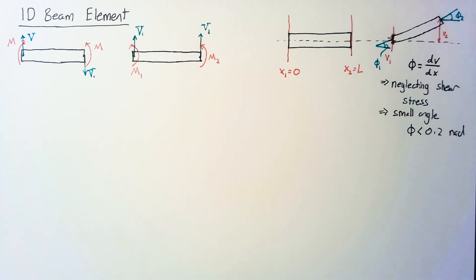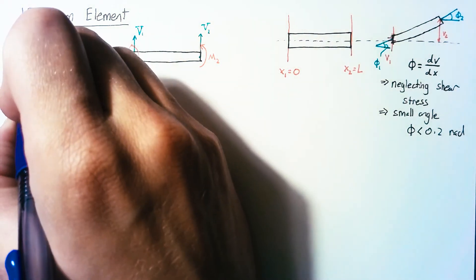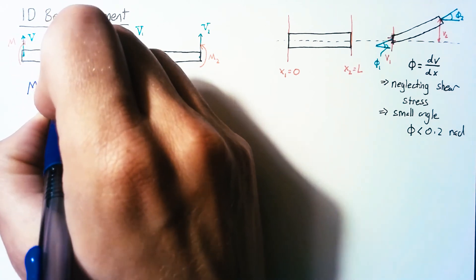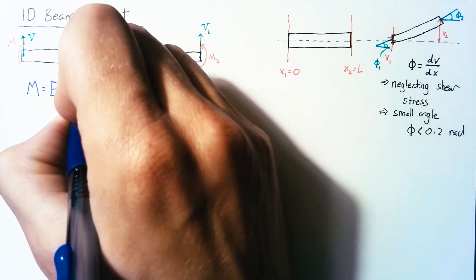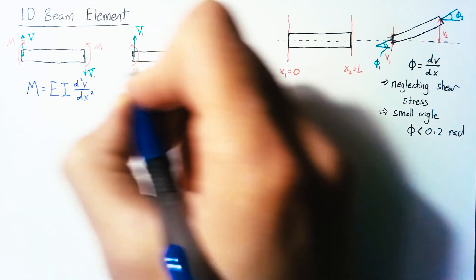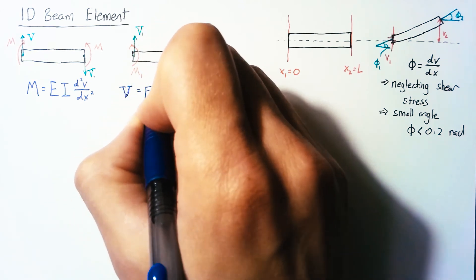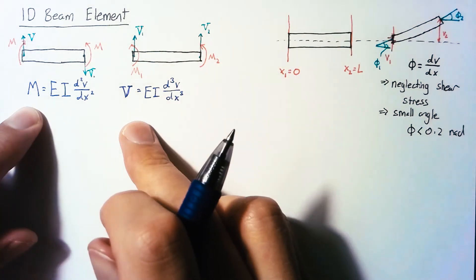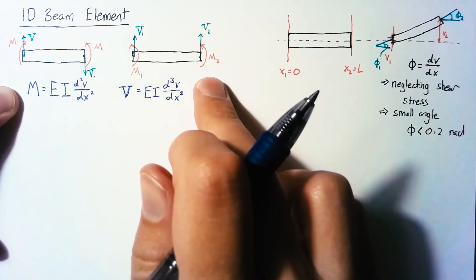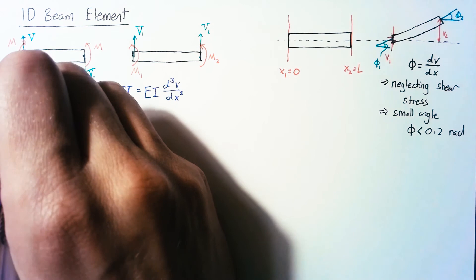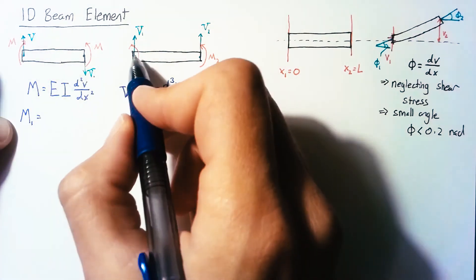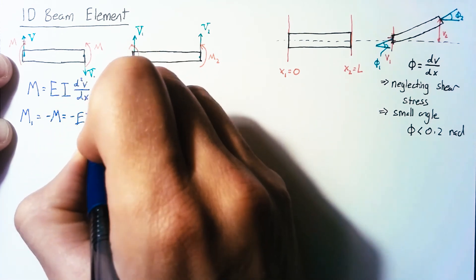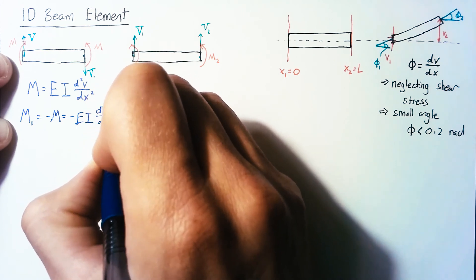The next step is looking at beam theory itself. Beam theory says that our moment is equal to Young's modulus multiplied by the moment of inertia multiplied by the second derivative of the vertical displacement with respect to x. It also says the shear force is equal to the same EI multiplied by the third derivative. We're going to apply these to the moments in our force vector. M1 is in the opposite direction of m, so we get negative EI times the second derivative, evaluated at x equals 0.